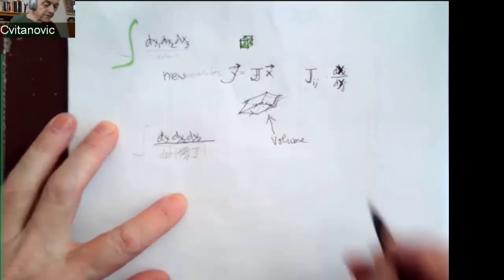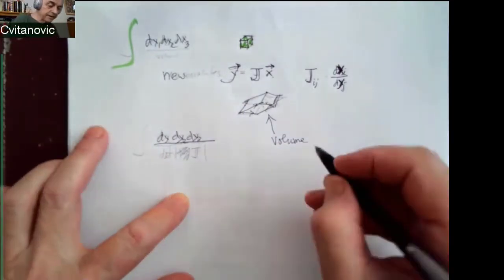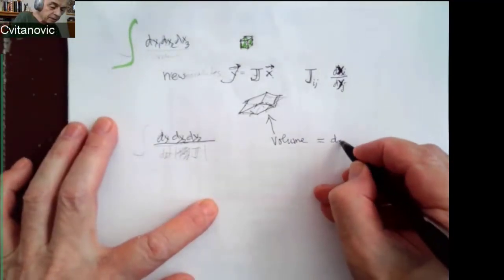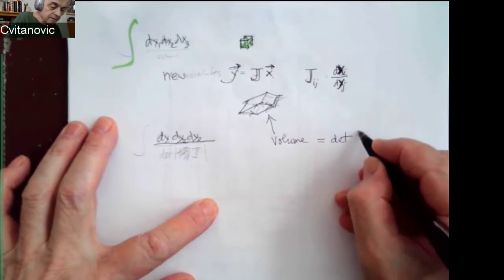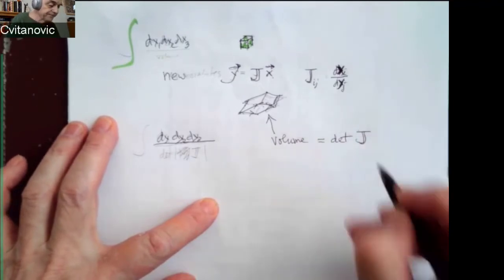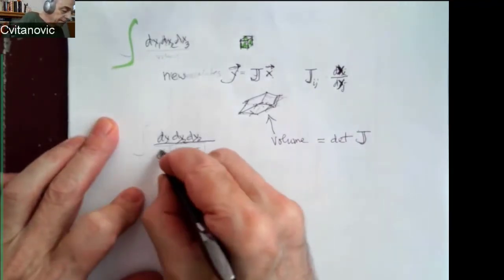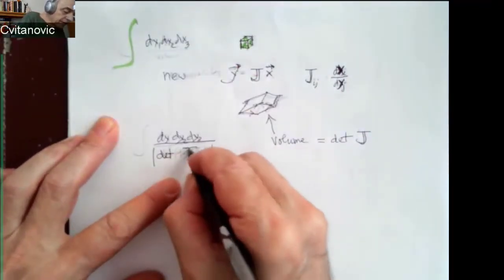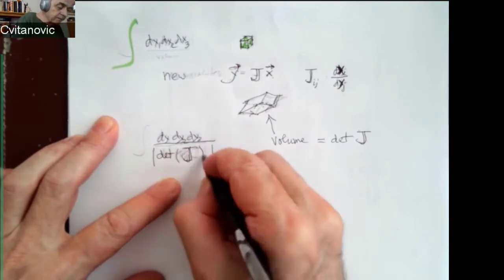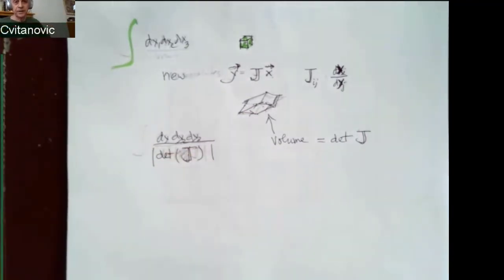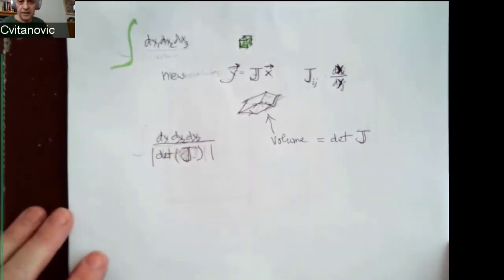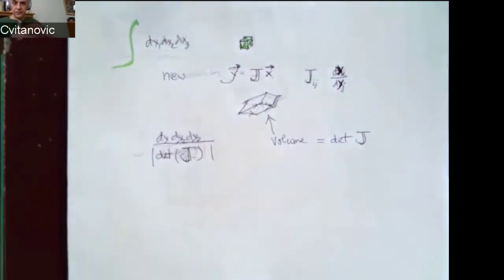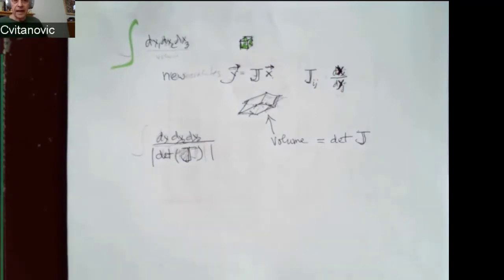So the new volume is volume. This volume happens so often in all of engineering and science that it has a name. It's called determinant of J. And because volumes are positive, there is an absolute sign. But main thing is that we have to compute these volumes. And we have to do it in general relativity or in control problems in robotics or any place where we have to change coordinate systems.